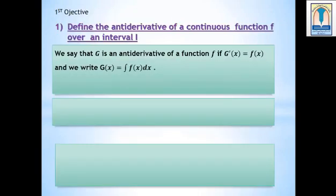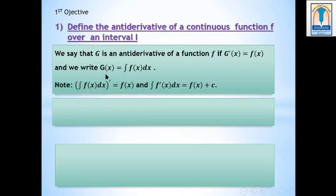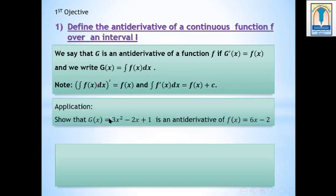We say that g is an antiderivative of a function f if g prime of x equals f of x. We write g of x equal integral of f of x dx. In order to prove that g is an antiderivative of a function f, you must prove that g prime of x equals f of x.